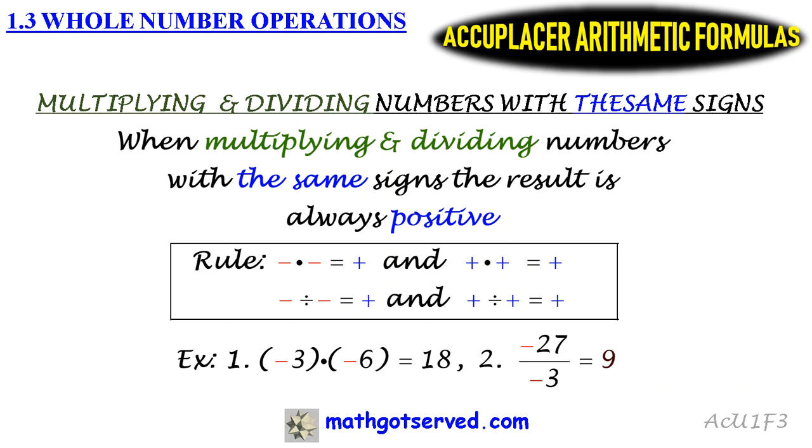Now let's take a look at an example that illustrates this rule. Two examples actually. So the first one: what if you multiply negative three and negative six, as indicated here? You notice that these two numbers have the same signs, namely negative. So what do you think the sign of the product would be?